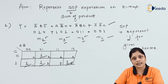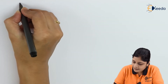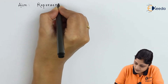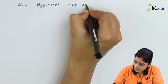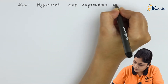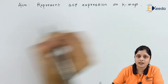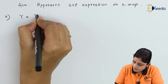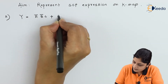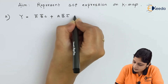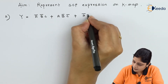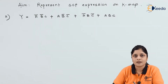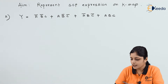We will consider the next example. For the second example, the aim is again to represent an SOP expression on Kmap. The second expression is: y equals ā·B̄·C plus a·B̄·C̄ plus ā·B·C̄ plus a·B·C.